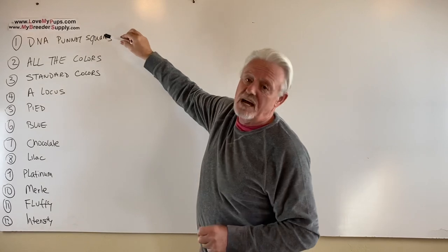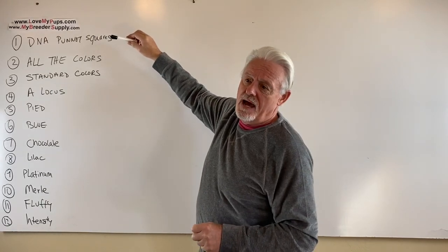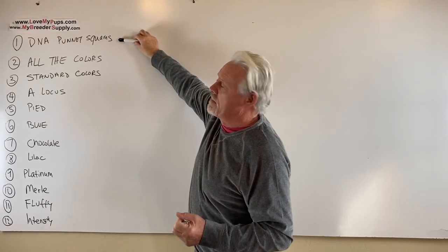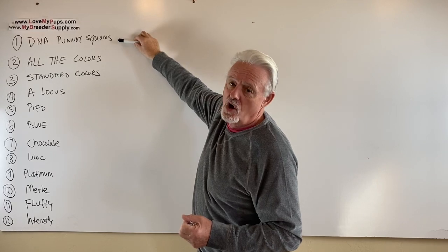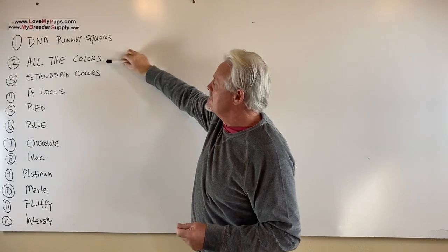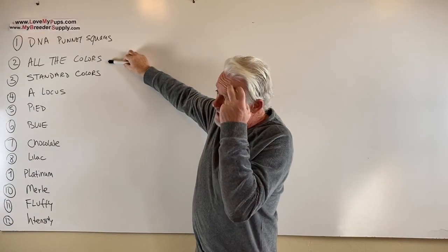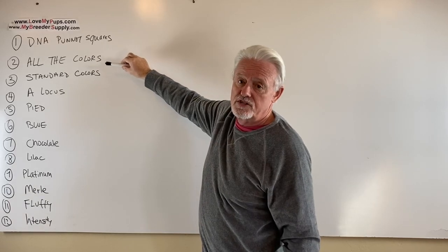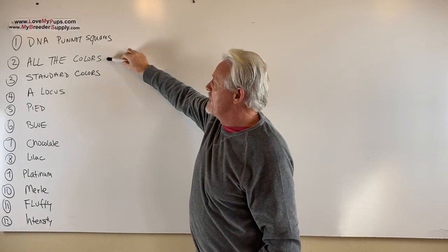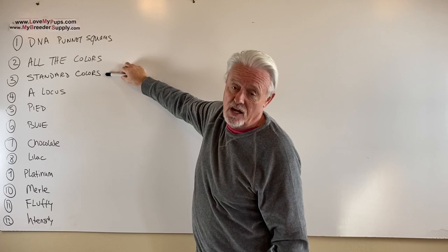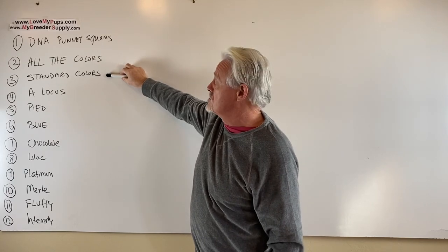So today we're going to talk about DNA and what DNA is and how the whole process works. We're going to talk about Punnett squares and how you can decide what the outcomes would be of two breedings. We're going to talk about all the colors, all the colors that you're going to see on a DNA report. We're going to talk about them briefly. Then we're going to talk about standard colors, the standard colors that you see in the show ring.